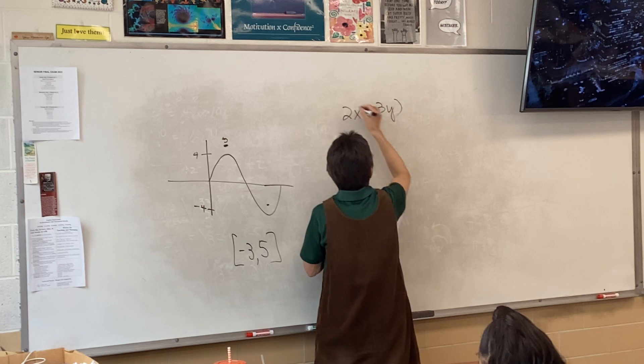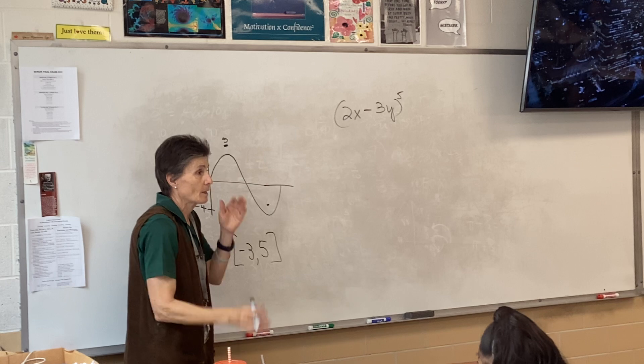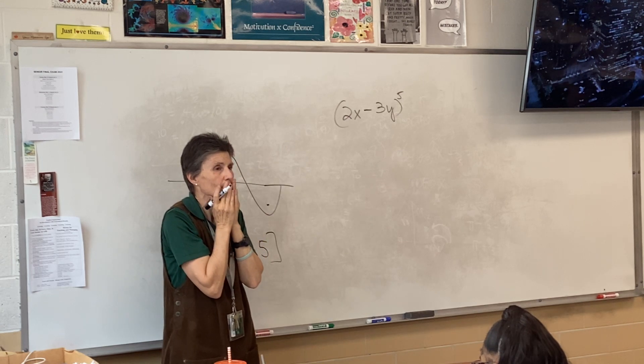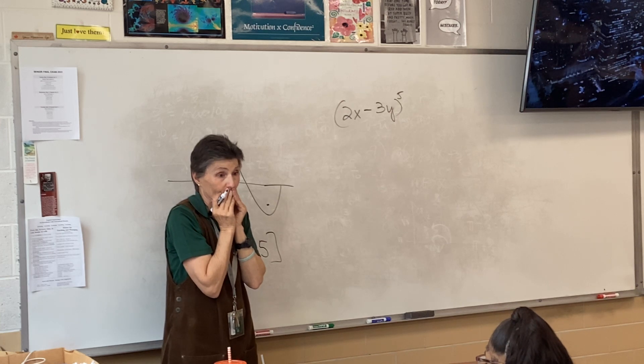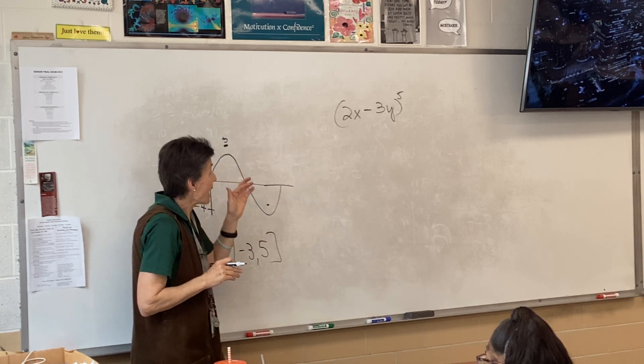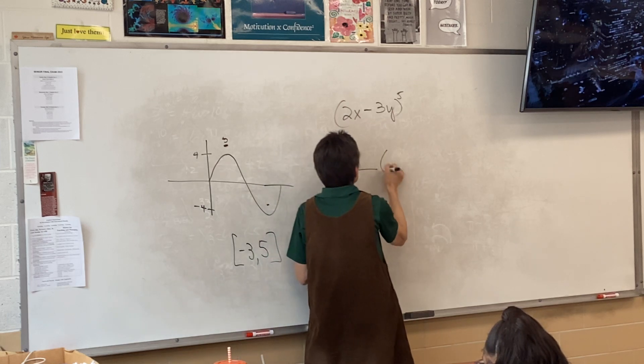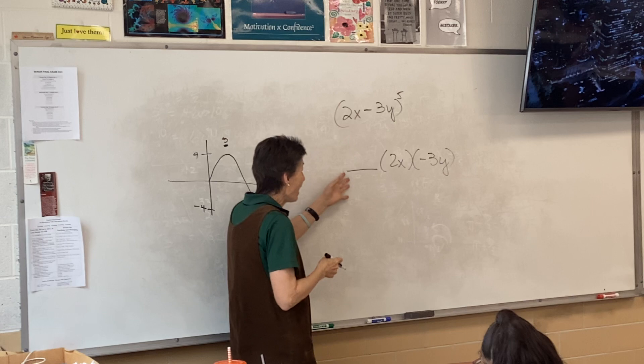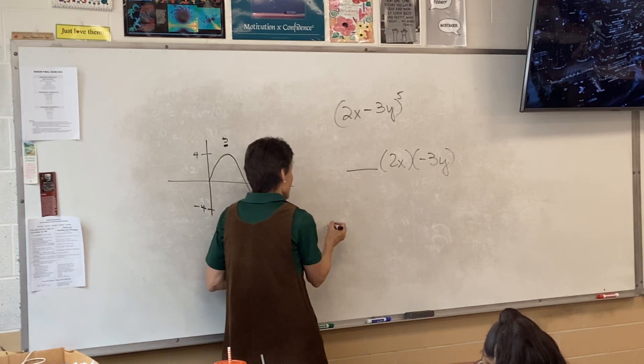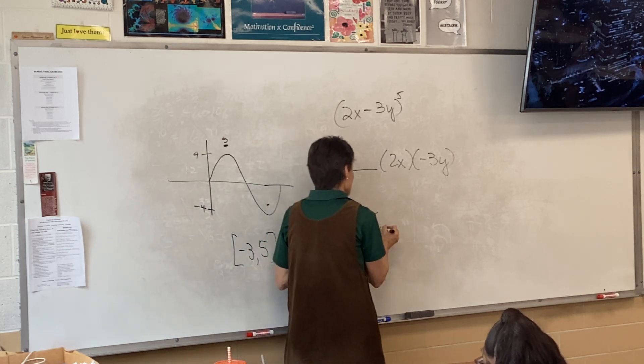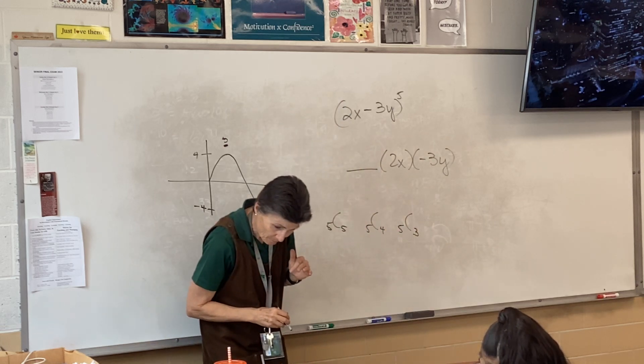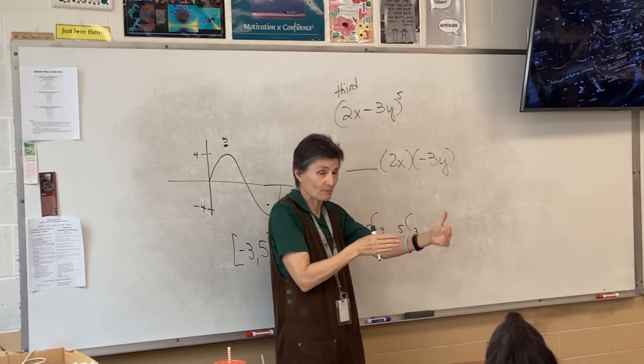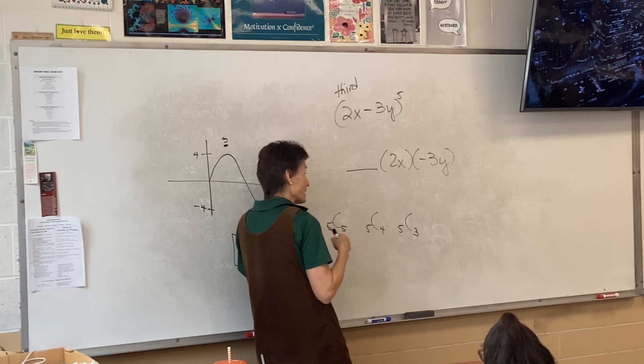This will be a calculator problem. We want to find the third term. Where do I start? What do I need to do to find the third term of this? I have to figure out the coefficient. There's a coefficient, there's a 2x, and there's a negative 3y. You can find the coefficient by doing combinations. 5c5 would be the first term, 5c4, 5c3. So I can type it on my calculator, 5c3.